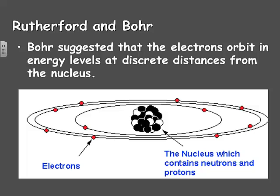Bohr suggested that the electrons orbit in energy levels at discrete distances from the nucleus. You can see that in this diagram that there are electrons in specific orbits, although there's more than one electron in an orbit which is a little bit different than we see with planets.